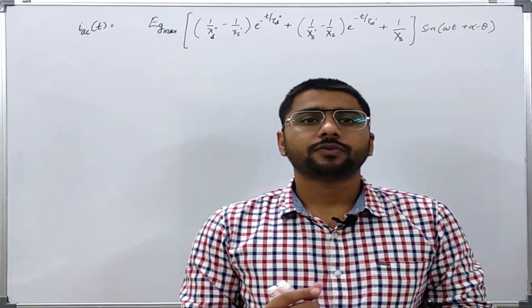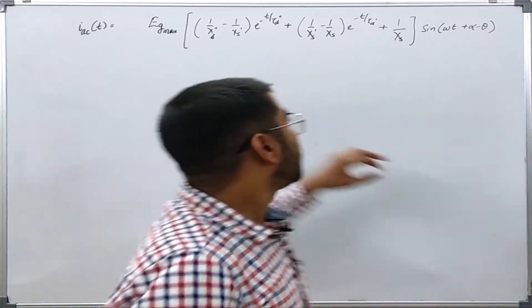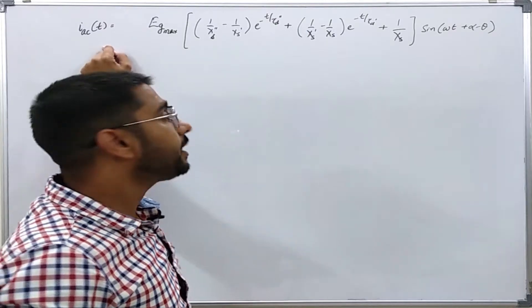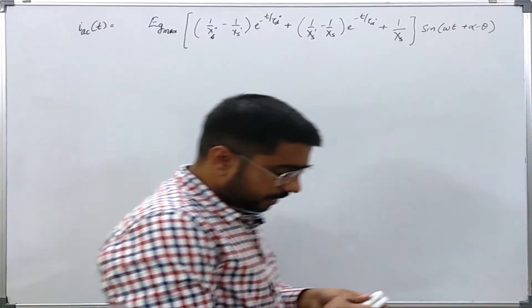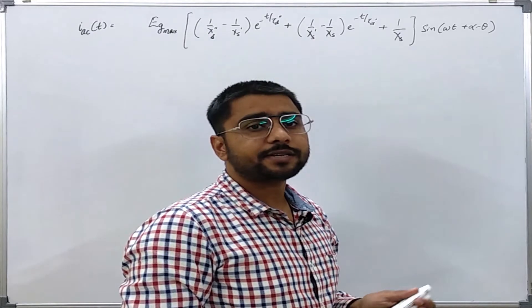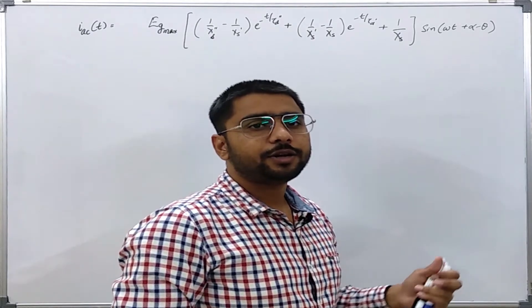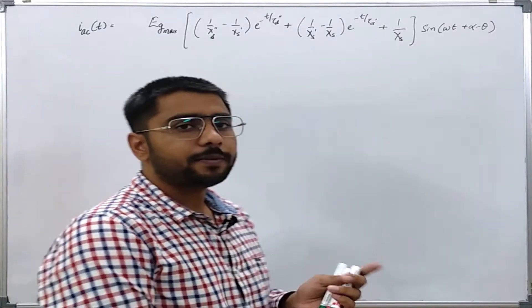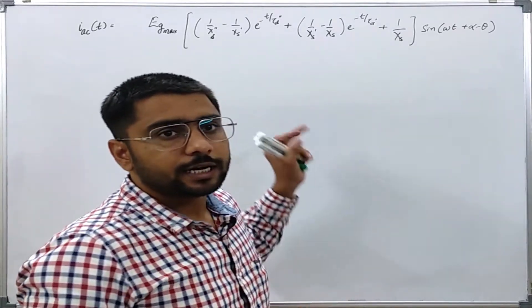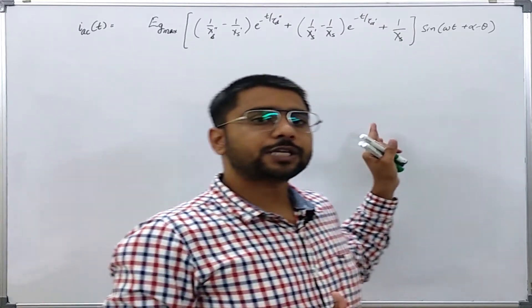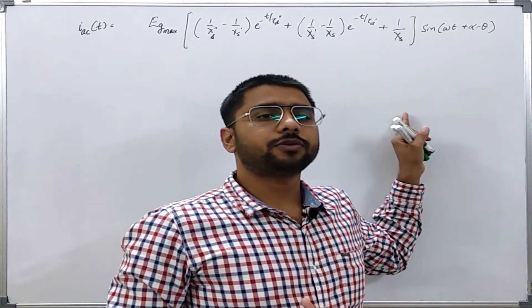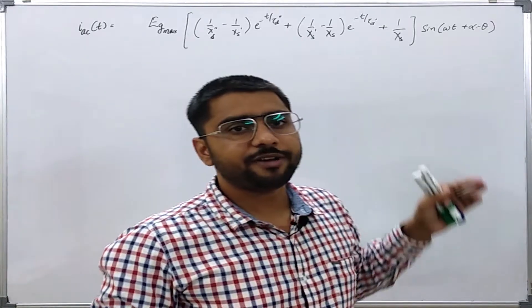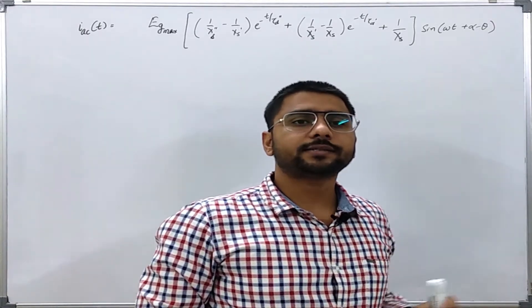We also saw the derivation for the expression for the symmetrical short-circuit current for the generator. When we study the synchronous machine in detail during our electrical machine course, we will see that whenever we are dealing with the current which is actually 90 degrees out of phase — that is, in quadrature phase with the induced EMF — then the direct axis reactance is used.